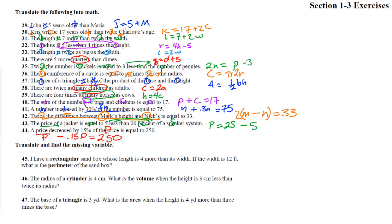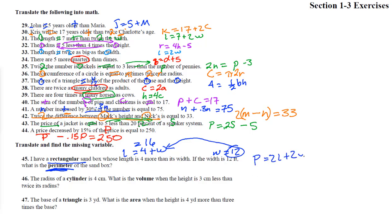Now we'll translate and solve. Number 45: a rectangular sandbox whose length is four more than the width. The width is 12 feet, so the length is 16. The perimeter formula is 2L + 2W: that's 2 times 16 plus 2 times 12, which is 32 + 24 = 56 feet.